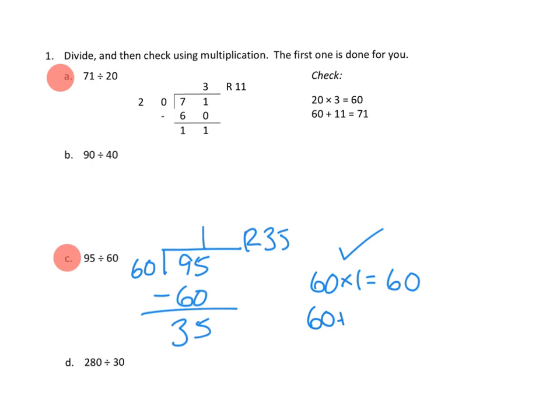So we'll say 60 plus 35 equals, that's 5 ones and 9 tens, so that's 95. Hey, sure enough, we ended up with our whole, 95.